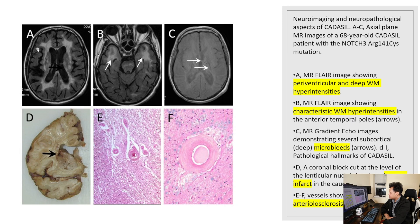Image A shows periventricular white matter hyperintensities, which are commonly found in CADASIL. Characteristic white matter hyperintensities in the anterior temporal lobes or poles are even more highly suggestive of CADASIL. There can also be microbleeds and lacunar strokes in the brain.